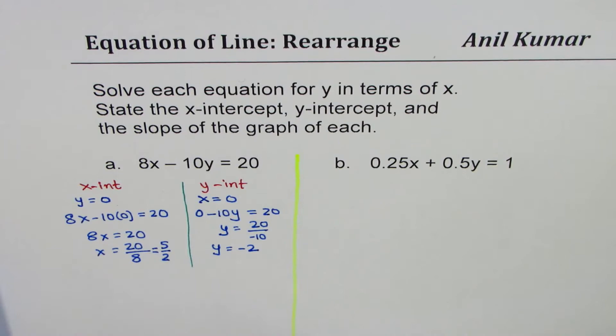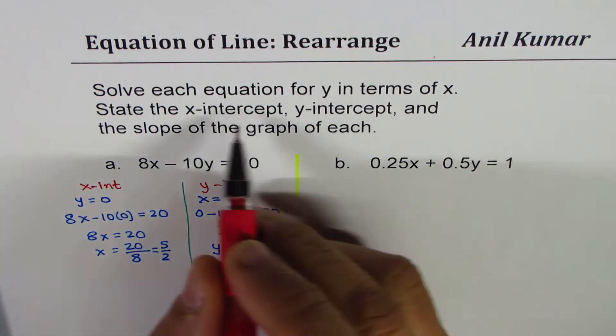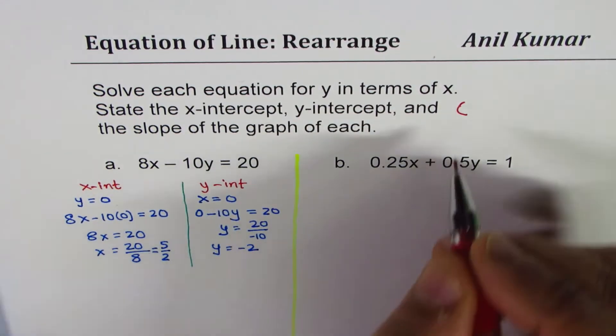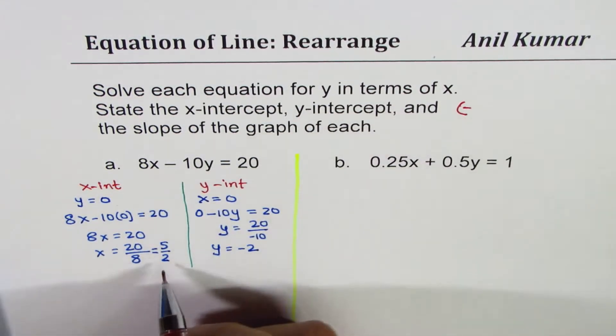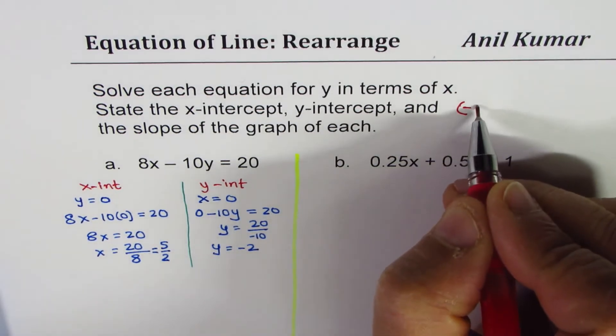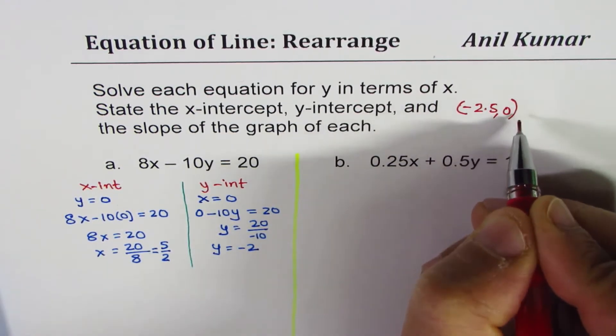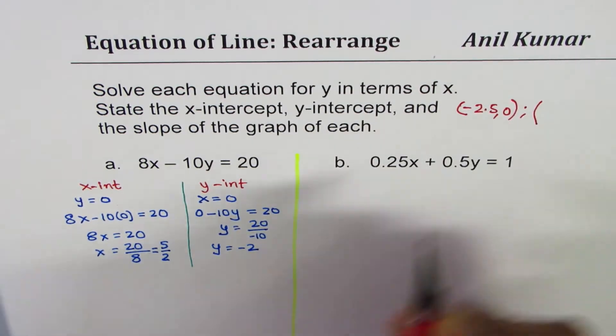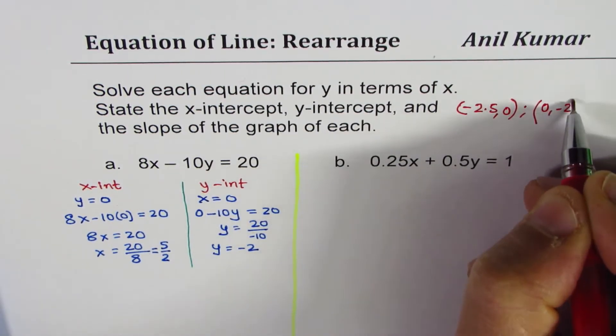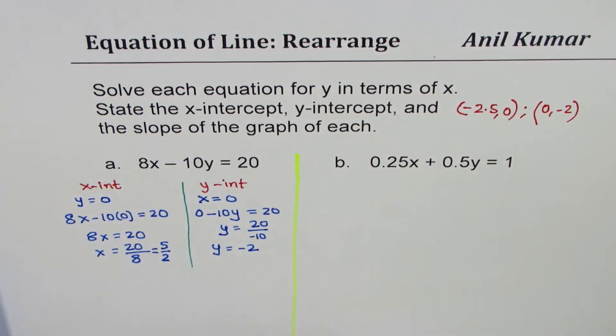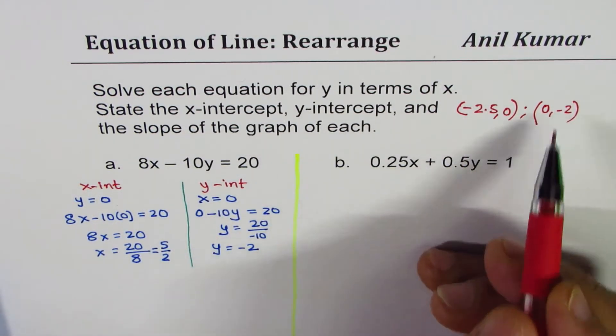So we have our x and y-intercepts, it's good to write them as coordinates. So I write down here, x-intercept is 5 over 2, you could write 2.5 also, 0, and the y-intercept is 0 minus 2. So we have both x and y-intercepts.